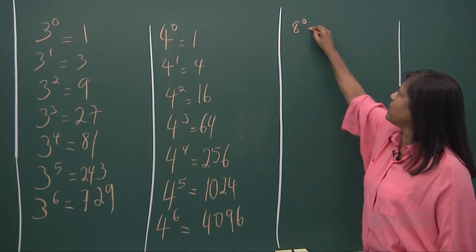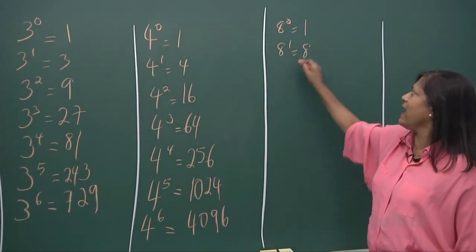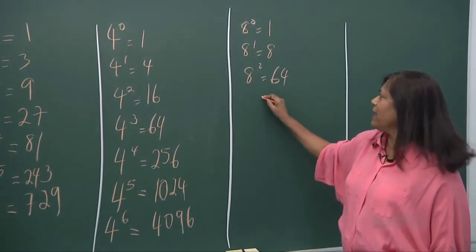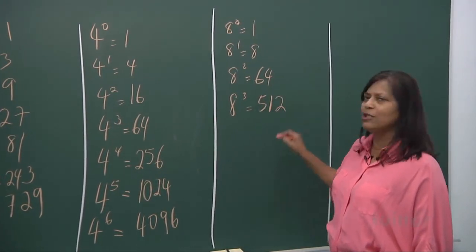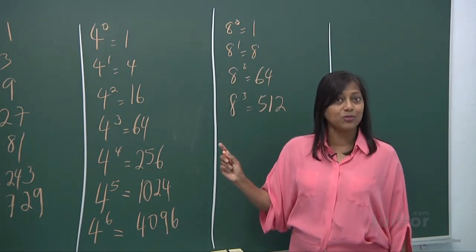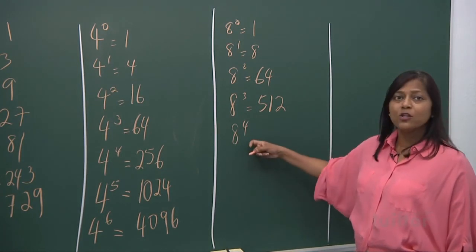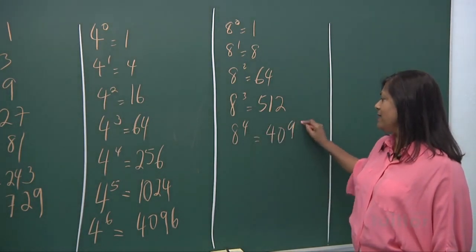8 to the power of 0 is 1, 8 to the power of 1 is 8, 8 to the power of 2 is 64, 8 to the power of 3 is 512. Isn't it amazing? Don't you see these numbers appearing in the indices of 2's? And if you look at 8 to the power of 4, 8 to the power of 4 is 4096.